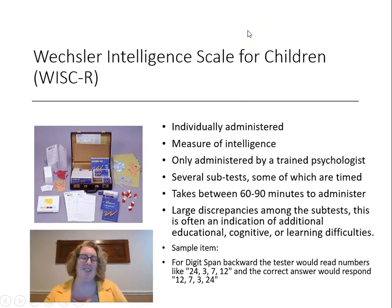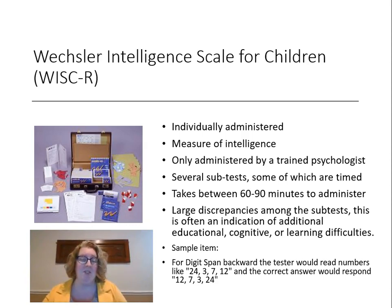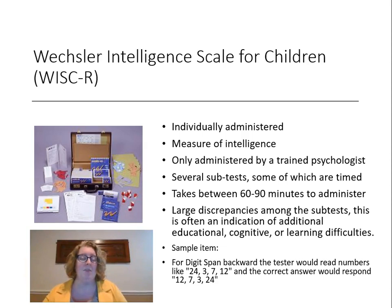The next test is the WISC — the Wechsler Intelligence Scales for Children — which is really the gold standard for intelligence testing. The WISC is for children starting around first grade; there's a WAIS for younger children and a separate test for adults. We're focusing on the WISC because it's most commonly used in schools. It's individually administered and must be given by a trained psychologist, making it expensive. It's a measure of intelligence — an ability test — with several subtests, some timed and some not, taking between 60 and 90 minutes.